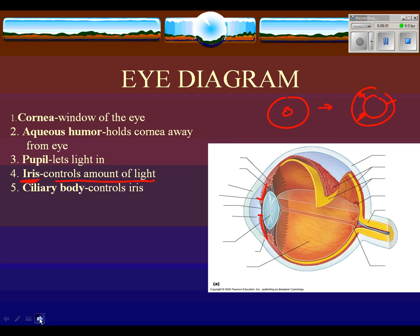Number five is the ciliary body, which is in control of the iris. It helps the iris contract and respond. These are involuntary muscles — you can't control how your iris works. One sign that somebody is high on drugs is that their pupils are dilated, which is something police officers look for. When you see on a show like Grey's Anatomy someone shine a light in an unconscious person's eye, they're checking for pupil reaction. If there's no reaction of the iris, that's a sign the person may be brain dead.